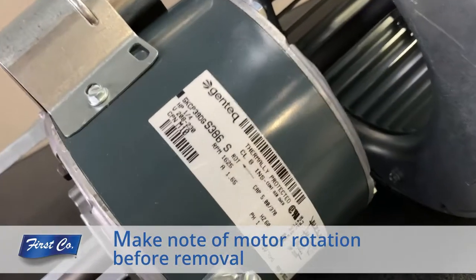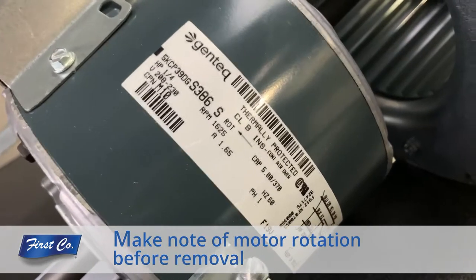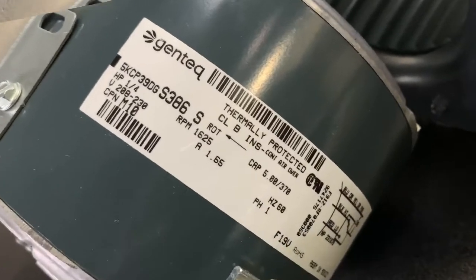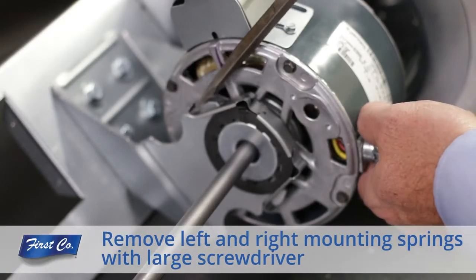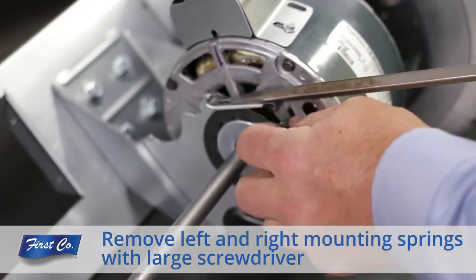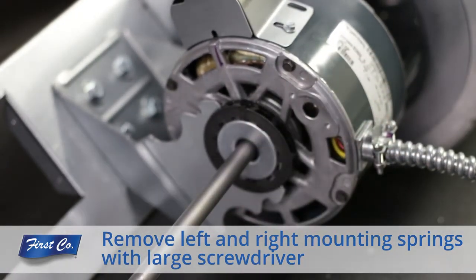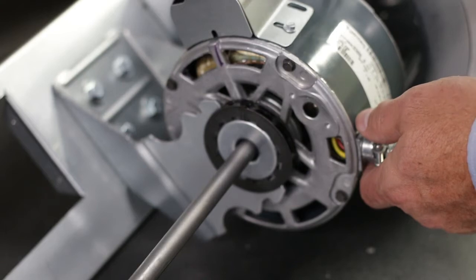Make note of the direction of the motor rotation before removing the motor. There will be a diagram on the motor itself. Using a large flat tip screwdriver, remove the mounting springs. Be sure to remove the spring clips on both sides of the motor.